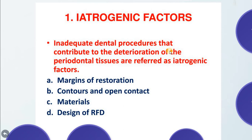The iatrogenic factors that can affect the periodontium include root perforation, vertical root fracture, and endodontic failure that may necessitate tooth extraction. Characteristics of dental restoration and removable partial dentures important to the maintenance of periodontal health include the location of the gingival margin for the restoration and the space between the margin of the restoration and the unprepared tooth.